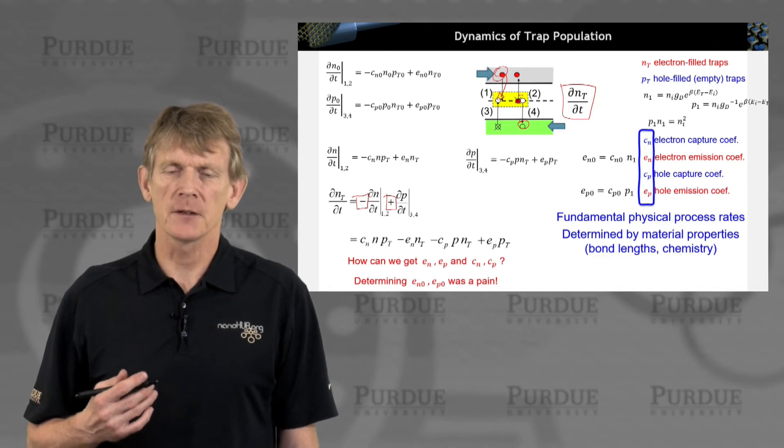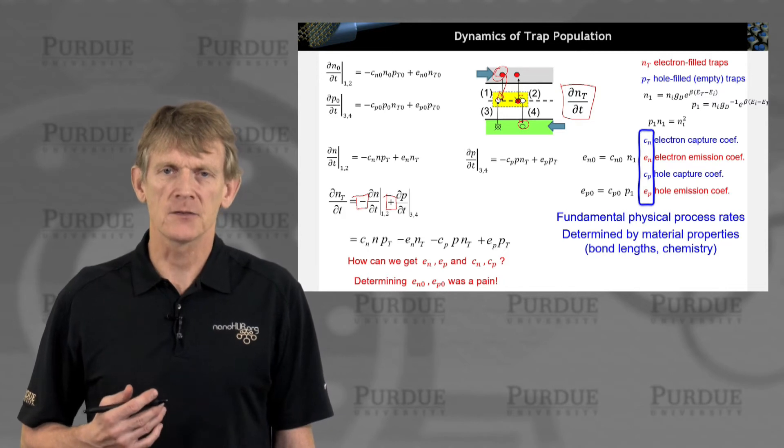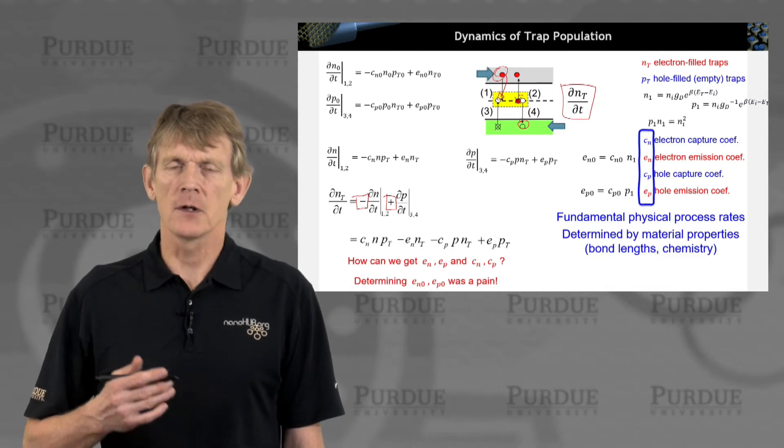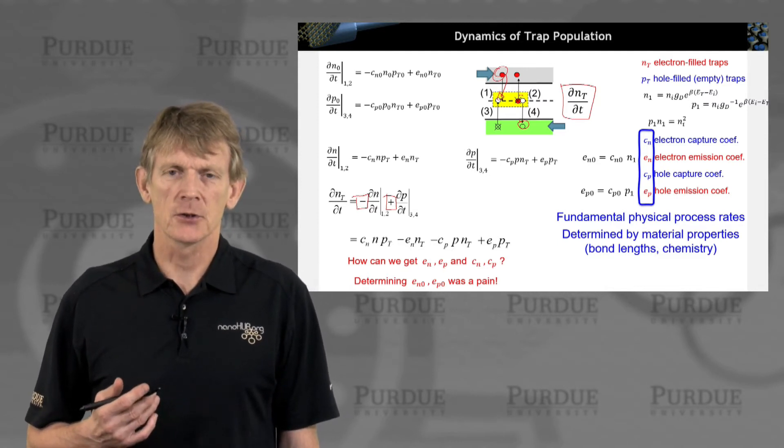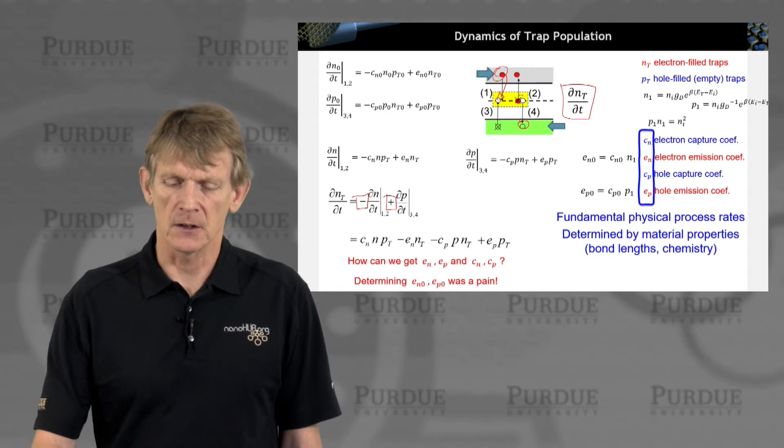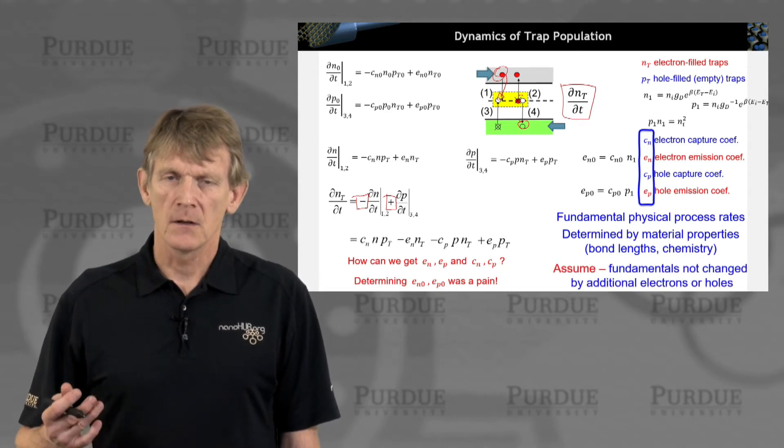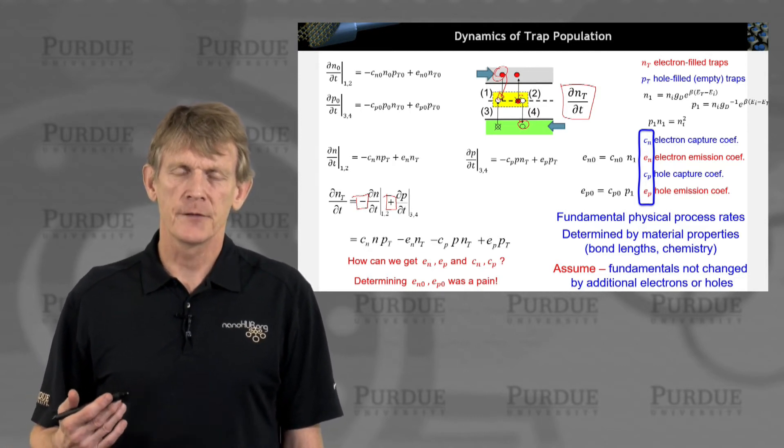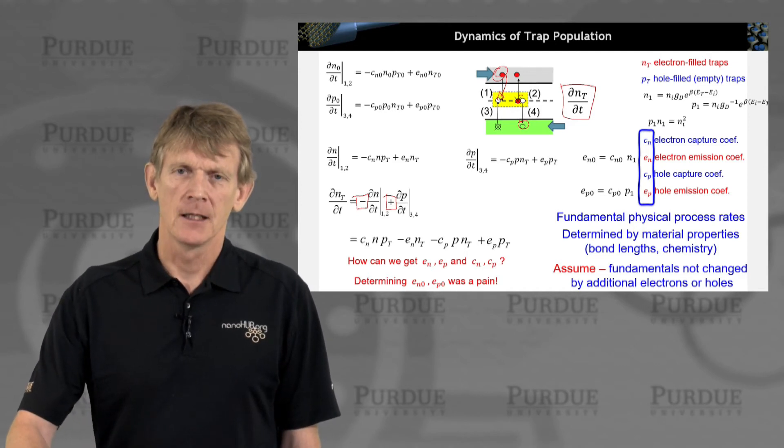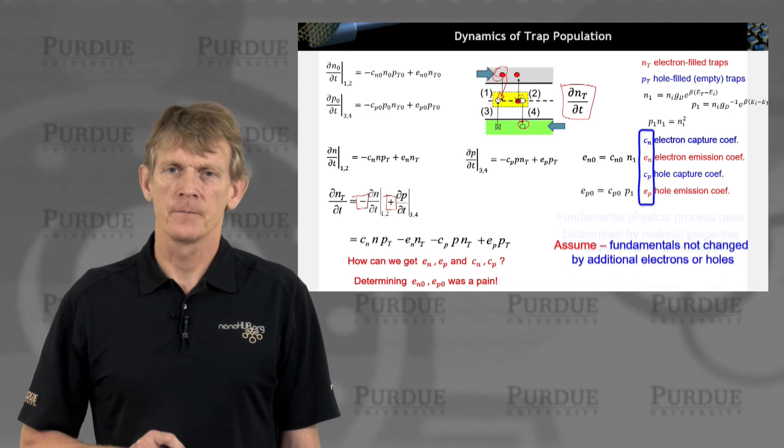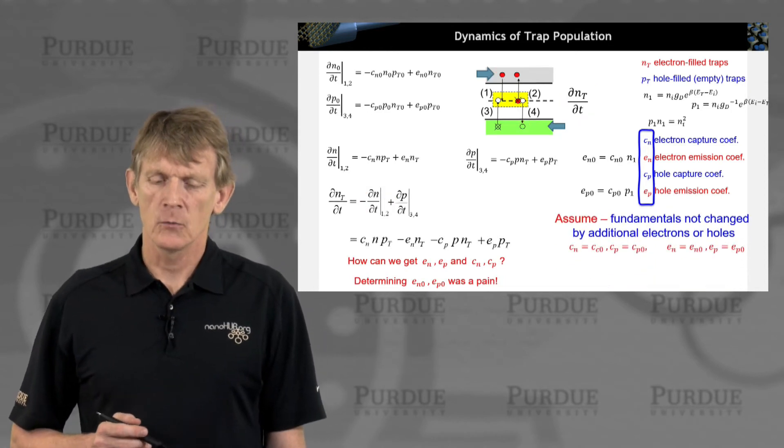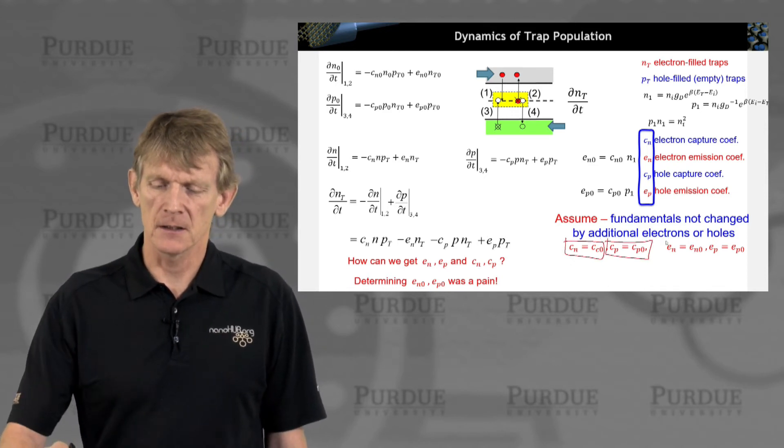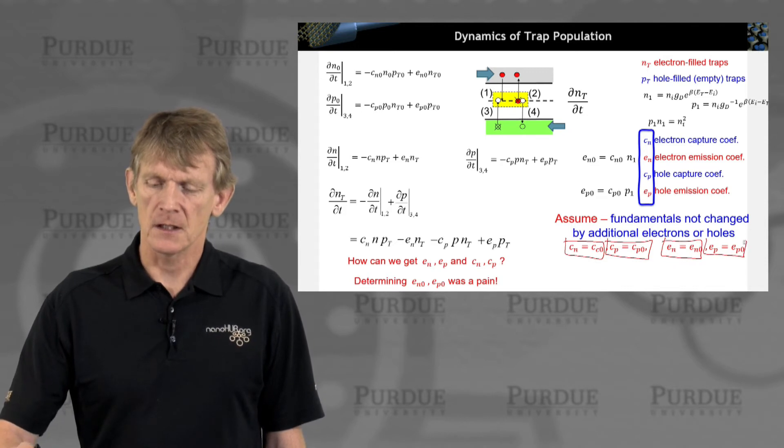There's no real fundamental change in the ability of these traps to emit electrons or to capture electrons. So the number of overall electrons around the system should not change those physical constants. We're not taking the system so far out of equilibrium or pushing it so far physically that the physical properties of capture and emission change.